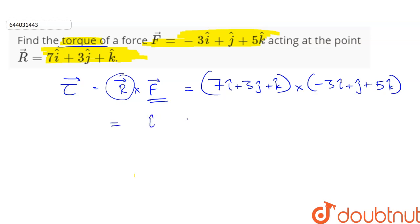This is i cap j cap k cap in the first row. In the second row we have r vector 7, 3, 1 and in third row we have minus 3, 1, 5.